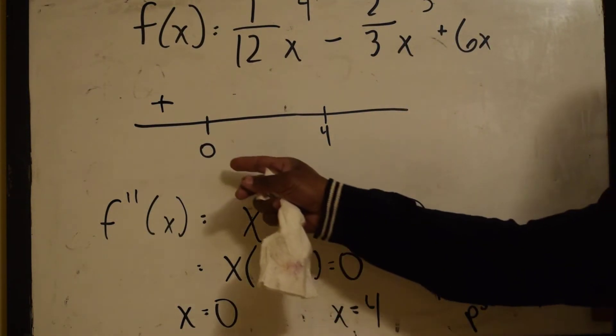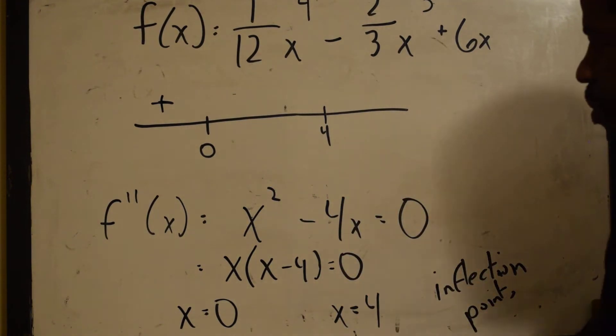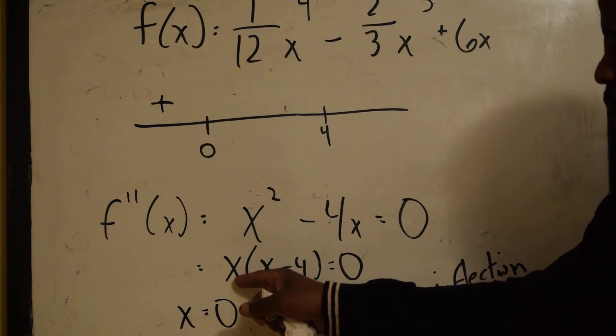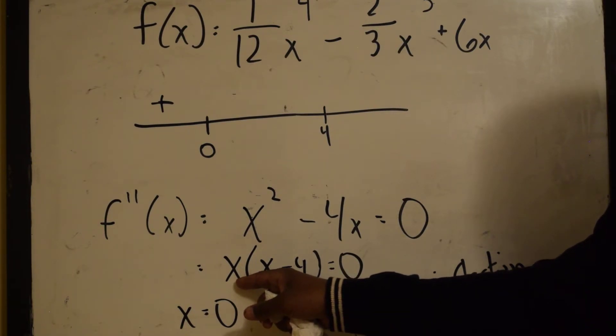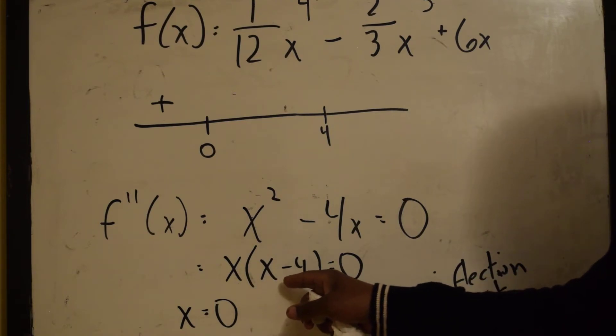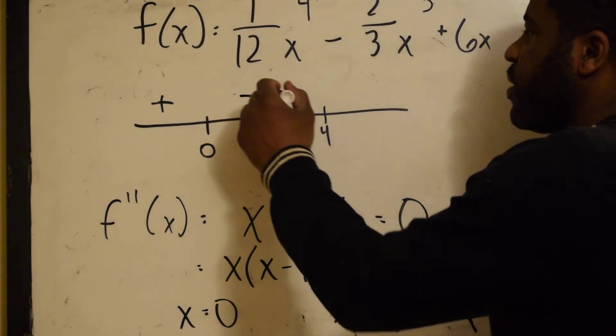Let's plug in any number between 0 and 4. Let's just plug in a 1. That would be 1 times 1 minus 4. 1, positive 1, times negative 3. Positive times negative gives us a negative.